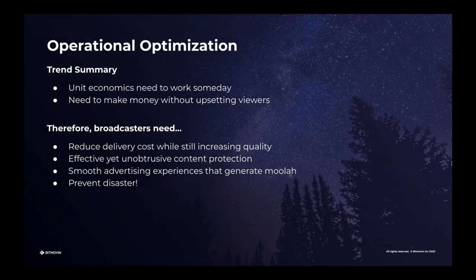Let's summarize those trends. Unit economics need to work at least someday — we need to make sure that on a per-viewer basis it's a reasonable economic model and that our cost structure supports this. We need to make money without upsetting our viewers. Therefore, the requirements are: reduce the delivery costs while still increasing quality, which seems like almost an impossible task — Chris, let us know if we can do that. We need effective but not obtrusive content protection. We need smooth advertising experiences that still generate revenue. And we always need to make sure we're preventing disaster.